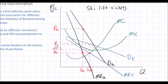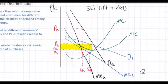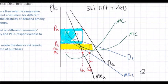If the resort had charged a single price, it would have sold more than QT because adults would have been willing to buy more lift tickets, so profits equal the yellow rectangle shaded. Through price discrimination, the resort actually sells fewer lift tickets since it charges a higher price to adults. However, the profits earned are significantly higher because the entire class of adult consumers are paying more for their lift tickets than those under age 18.